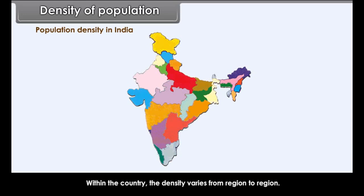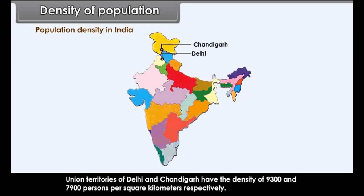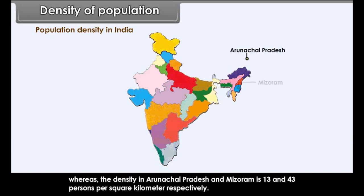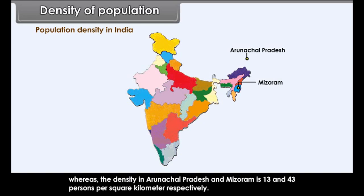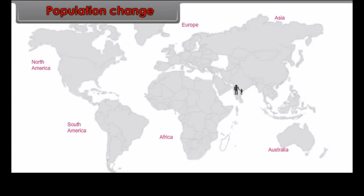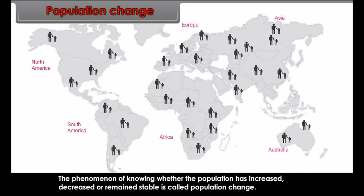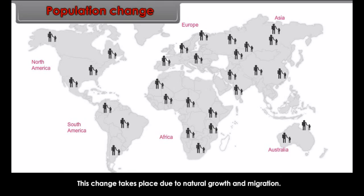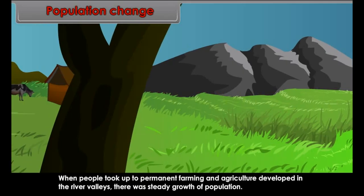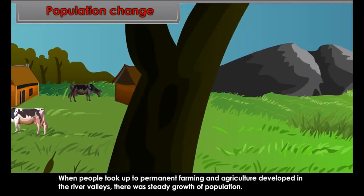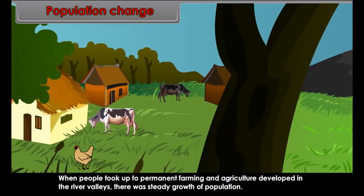Population Density in India. India is one of the most densely populated countries in the world. The most striking feature is that population density has been consistently increasing over the years. India's density in 2001 was 324 persons per square kilometer. Within the country, density varies from region to region — Union Territories of Delhi and Chandigarh have densities of 9,300 and 7,900 persons per square kilometer respectively, whereas Arunachal Pradesh and Mizoram have only 13 and 43 persons per square kilometer respectively.